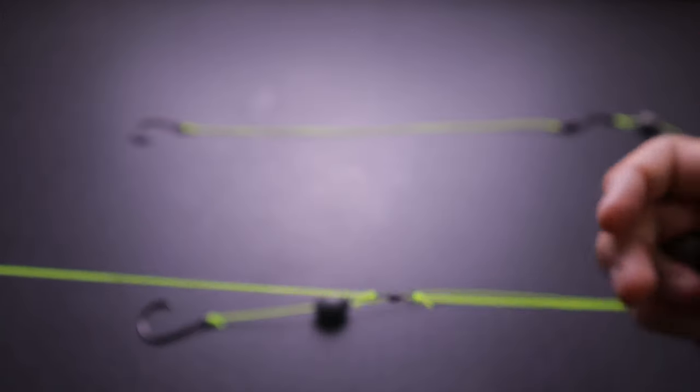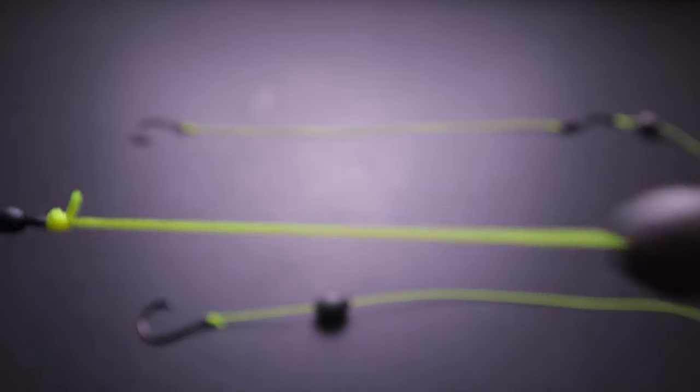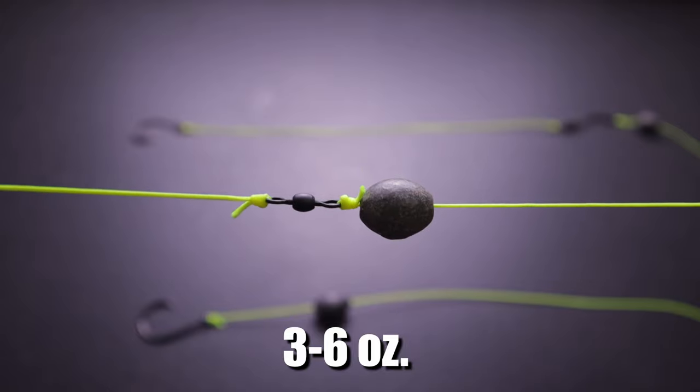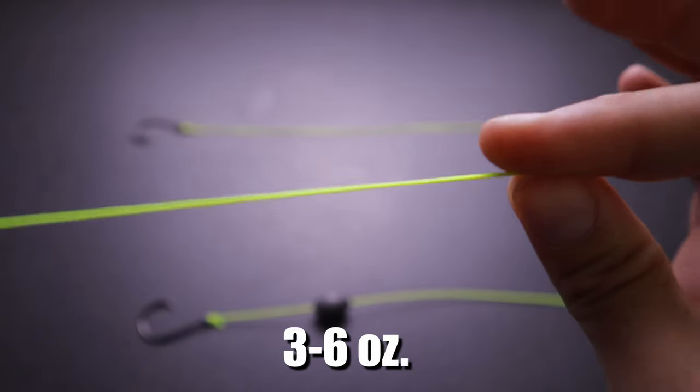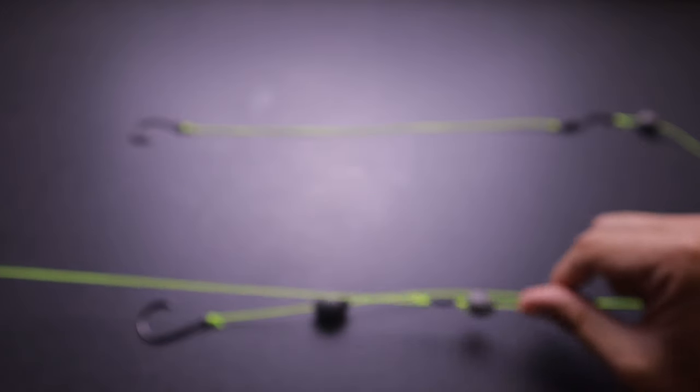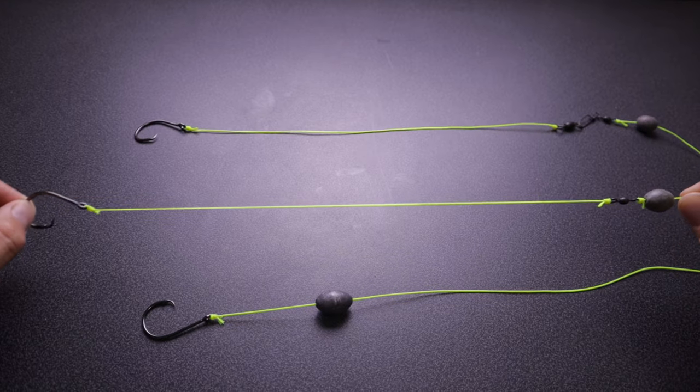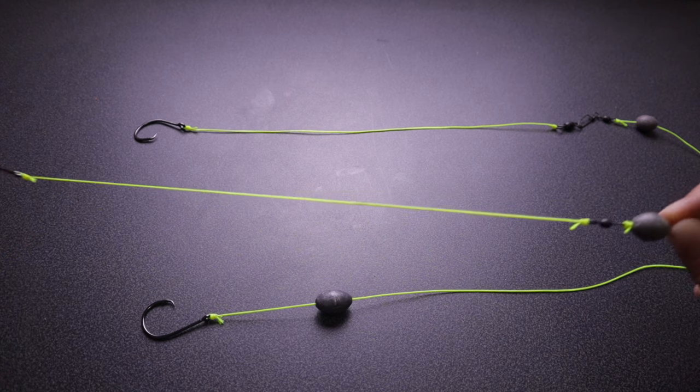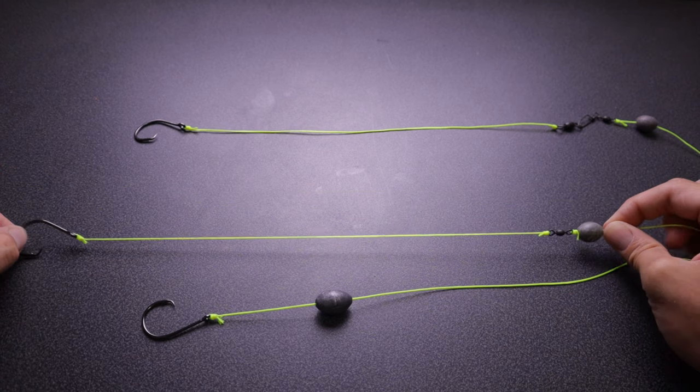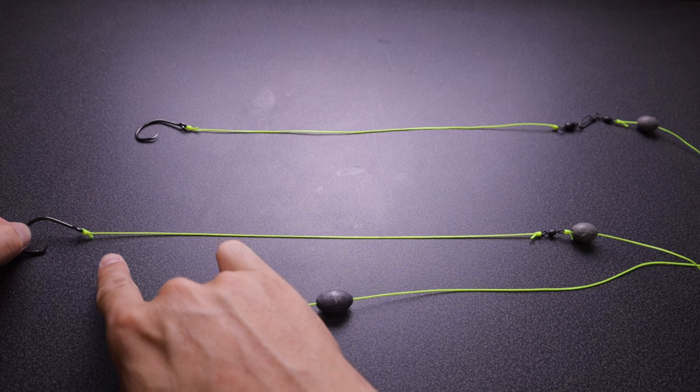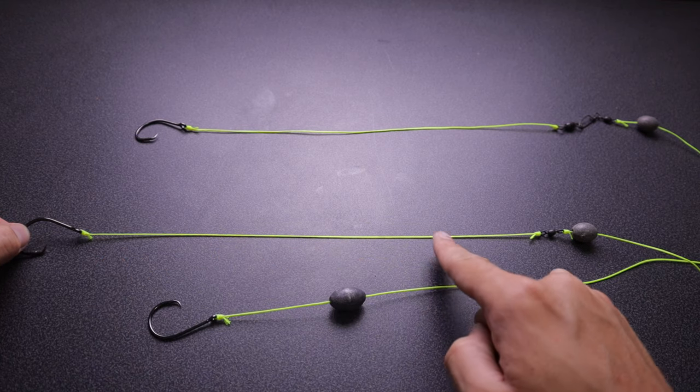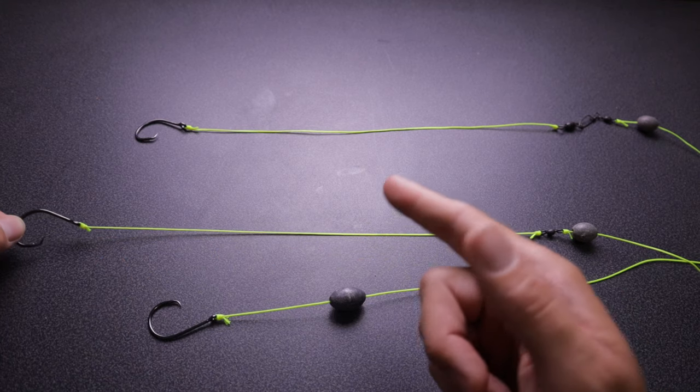The leader goes along with the structure that you're fishing to a barrel swivel, and then you have your weight above that barrel swivel, and then you have your main line or shock leader that's attached to your braid via an FG knot.